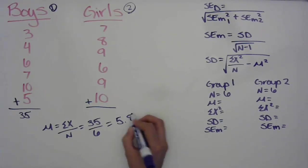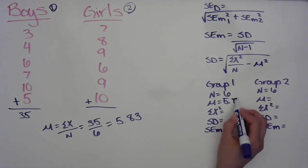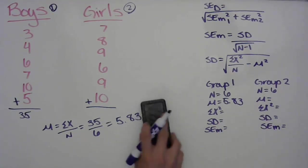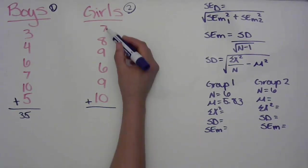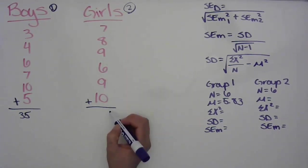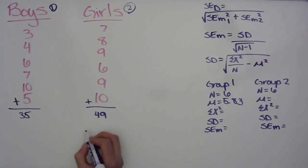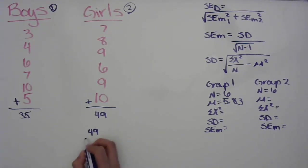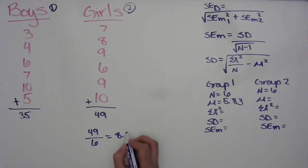Now let's do the same for group two. We add all of those numbers up and that gives us 49. Then using the mean formula, 49 divided by 6 gives us a mean of 8.17.